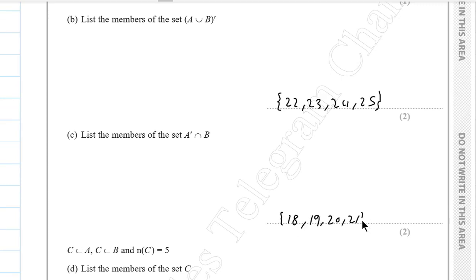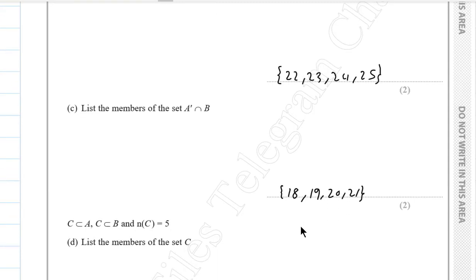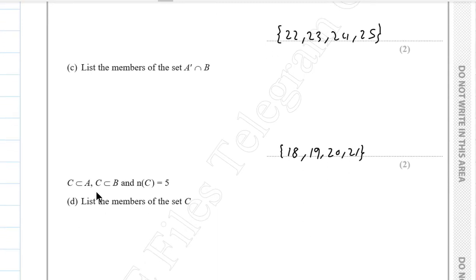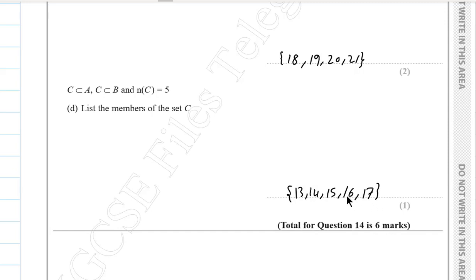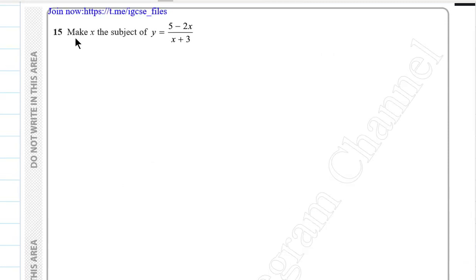Part d: C ⊆ A, C ⊆ B, and the number of elements of C is 5. List the members of C. Since C must lie in the intersection of A and B, which is {13, 14, 15, 16, 17}, C = {13, 14, 15, 16, 17} — exactly 5 members.